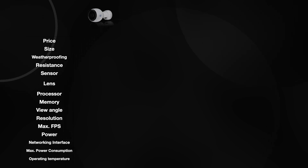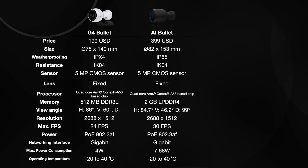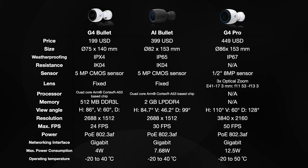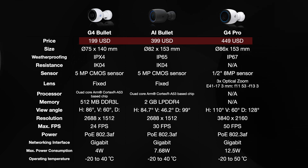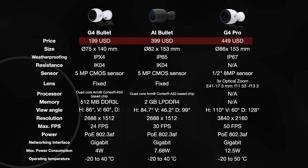There are three similar types of bullet cameras: G4 Bullet, AI Bullet, and G4 Pro, pricing from $199, $399, and $449.